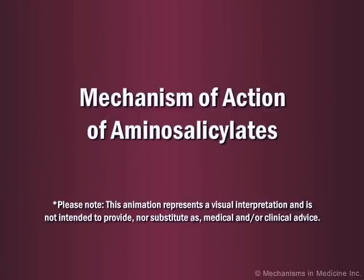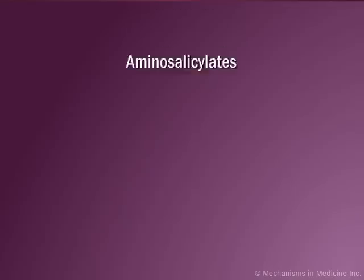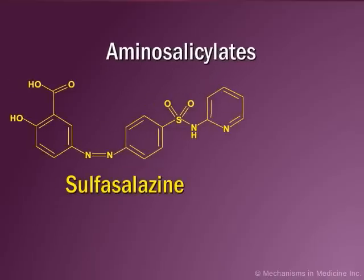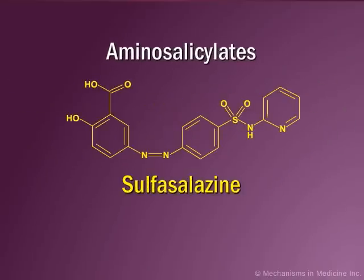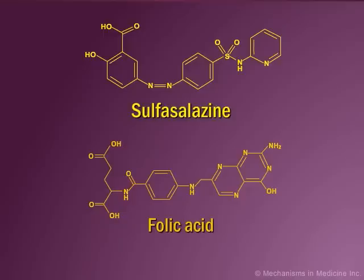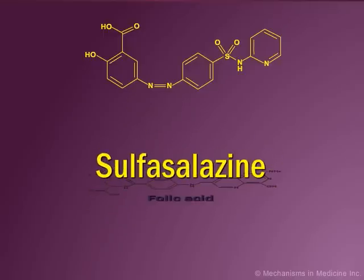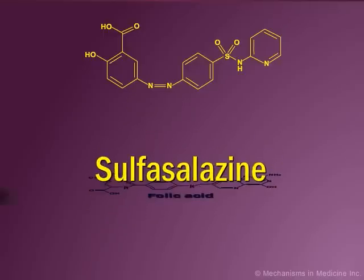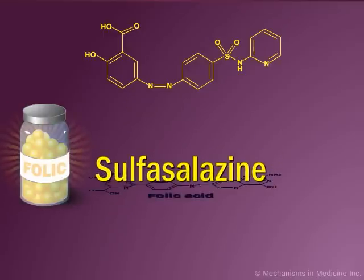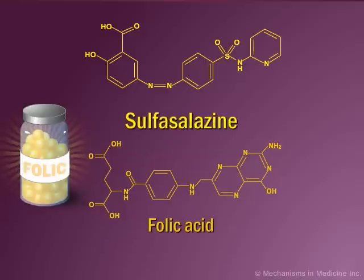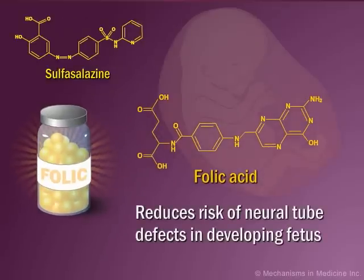Mechanism of Action of Aminosalicylates. Aminosalicylates include sulfasalazine and 5-aminosalicylic acid. Sulfasalazine, a sulfa drug, inhibits folic acid synthesis. As such, folic acid supplements should be taken with sulfasalazine to reduce the risk of neural tube defects.